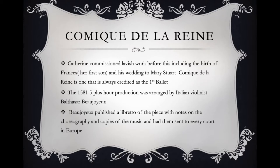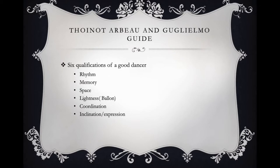This is why in this dance history course, I charge you with documenting and describing dance in a way that someone in the future could understand the movements — even if the technology were no longer around. Six qualifications that dance masters identified for a good dancer: rhythm, memory, use of space, lightness — the ability to jump without shaking the floor — coordination, and an inclination to expression, because of the use of pantomime.